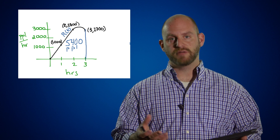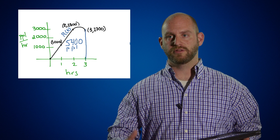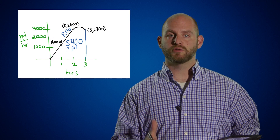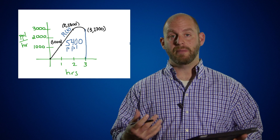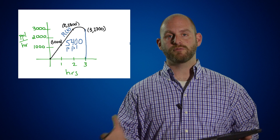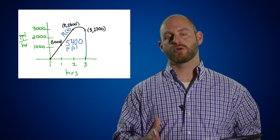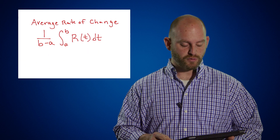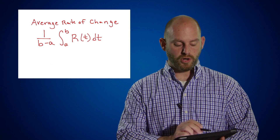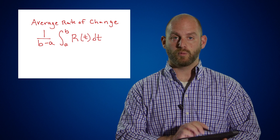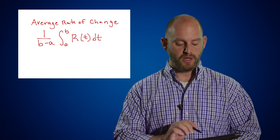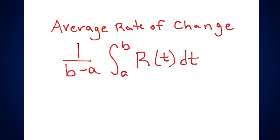Looking at these different points, we see that a different number of people are coming in depending on what time it is during those three hours. It may help us as the manager to see the average rate of change of people entering the auditorium. The average rate of change formula is one over (b minus a) — one over the time interval, so hour three minus hour zero — times the integral from a to b of our rate of change.